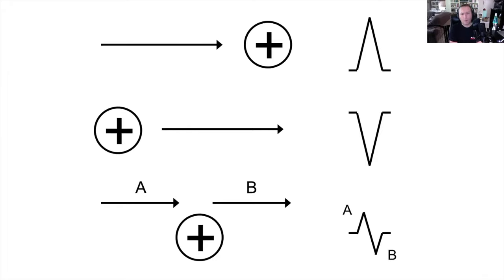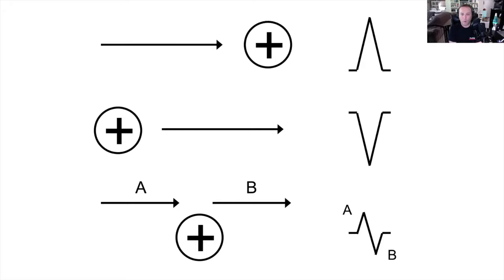Or if that wavefront moves perpendicular to a positive electrode, you will get a so-called equiphasic or isoelectric QRS complex that starts out positive as the wavefront approaches, but then ends up negative as it goes by. That example in the lower right-hand corner shows what we would call an equiphasic or isoelectric — meaning an electrically neutral — QRS complex.